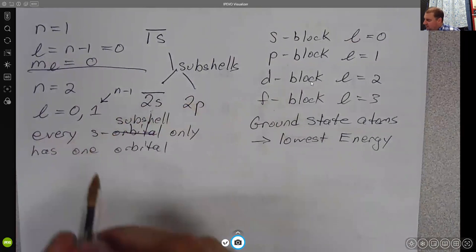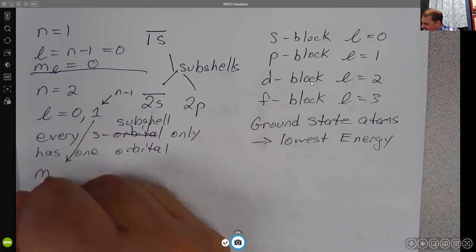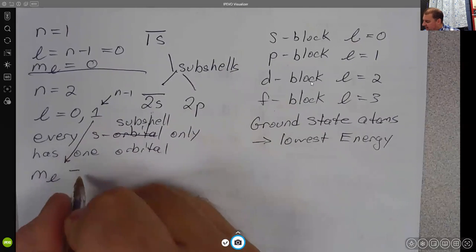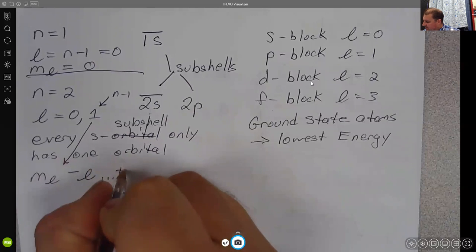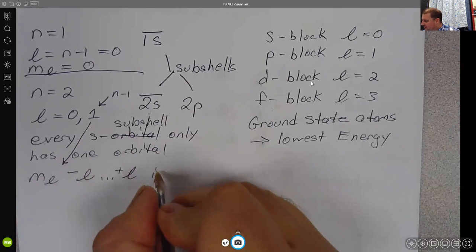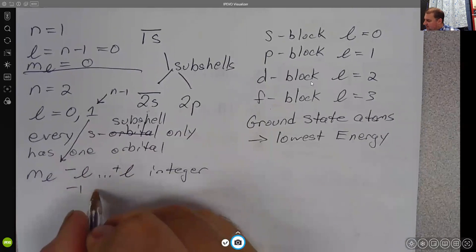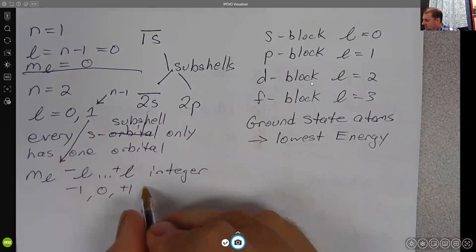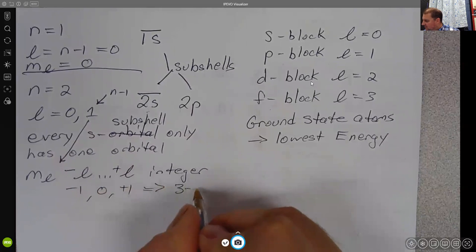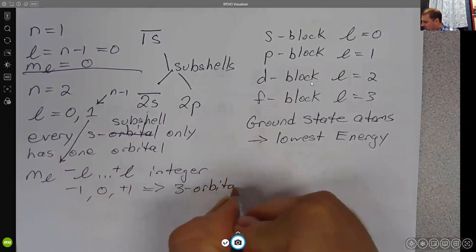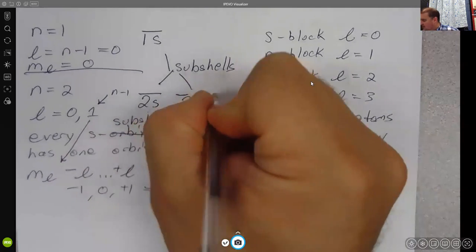But when you look at L equals 1, M sub L is allowed to be everything from negative L up to positive L as long as it's an integer. So we can go from negative 1 to 0 to positive 1, which gives us three orbitals in the 2p.